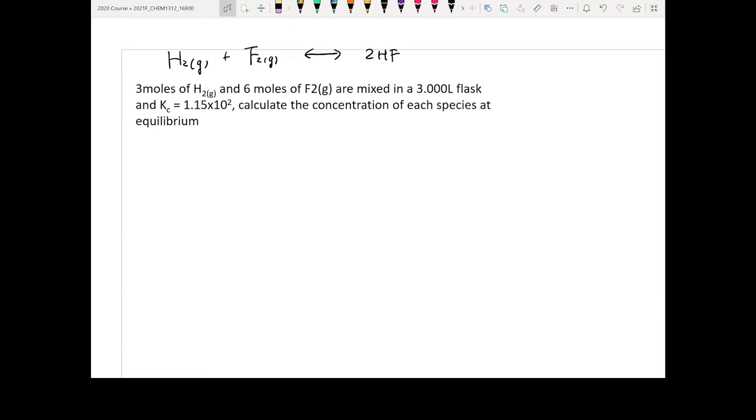Okay, so when we read this question, the first thing is actually looking for your Kc. We know the Kc is 1.15 times 10 to the second. Can we use small x approximation? You cannot, because it's between 10 to the negative 4 and 10 to the fourth. So we know small x approximation is not going to work.